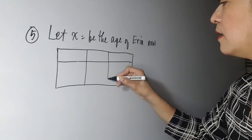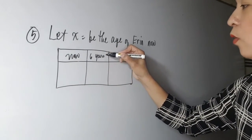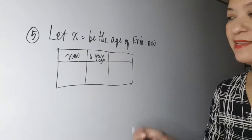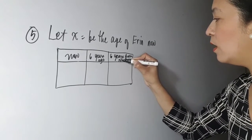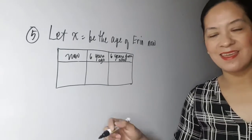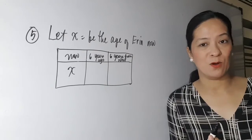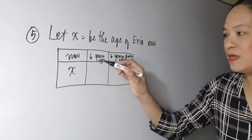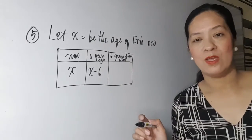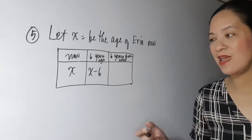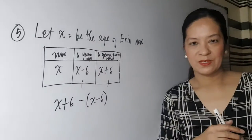Let us put it in a table. This column is age now, this is six years ago, and this is six years from now. If we represent Erin's age now as X, then Erin's age six years ago is X − 6, and six years from now is X + 6. So we have a difference: Erin's age six years ago is subtracted from Erin's age six years from now.